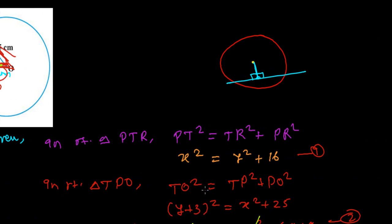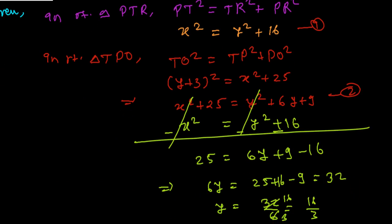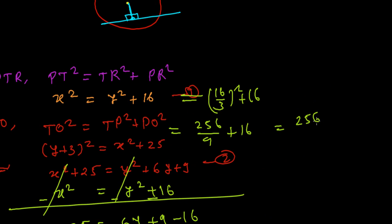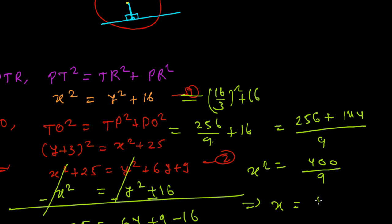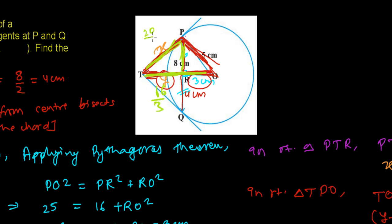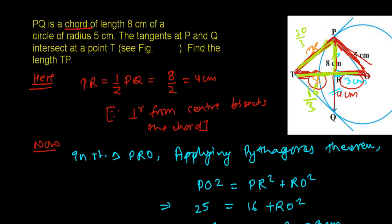Subtracting equation 1 from equation 2, the X² terms cancel and we get: 25 = 6Y + 9 − 16, so 25 + 16 − 9 = 6Y, giving 32 = 6Y, therefore Y = 32/6 = 16/3. Now X² = Y² + 16 = (16/3)² + 16 = 256/9 + 144/9 = 400/9. So X = √(400/9) = 20/3. Therefore TP = 20/3 cm, which is the answer we needed to find.